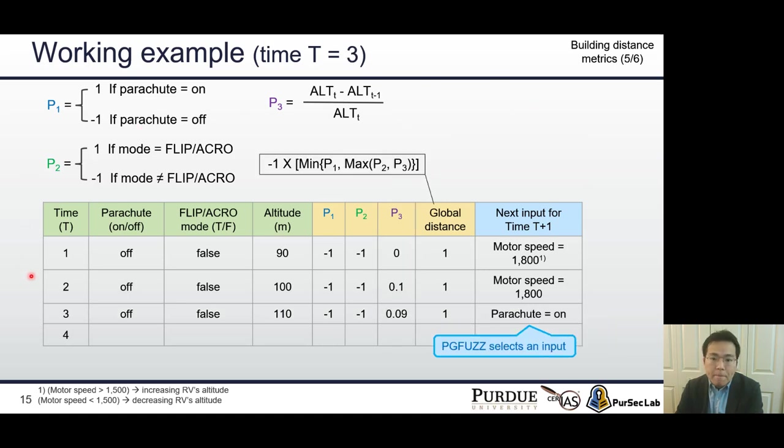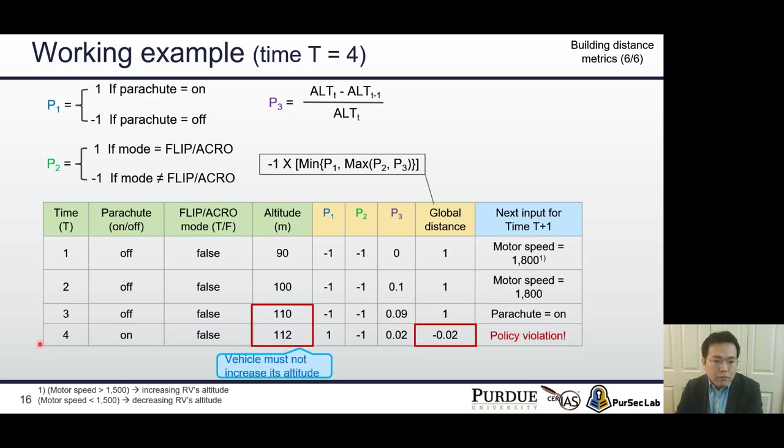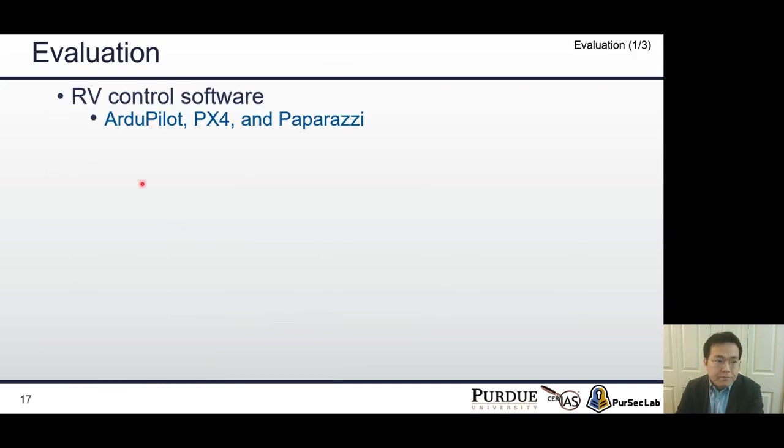When time T is 3, let's assume that PGFUZZ wanted to deploy the parachute as next input. When time T is 4, we release the parachute. However, the global distance returns a negative value. In other words, it shows the RV's current state violates the parachute policy. This is because we kept increasing motor speed and altitude. As a result, the parachute was deployed while the vehicle was increasing its altitude. However, this is a policy violation.